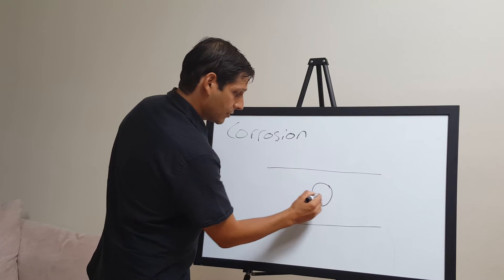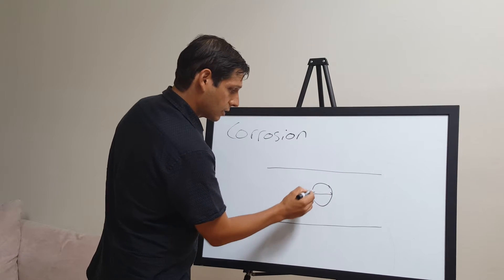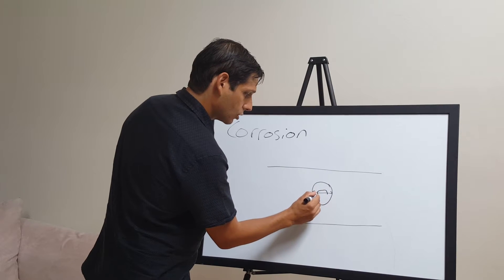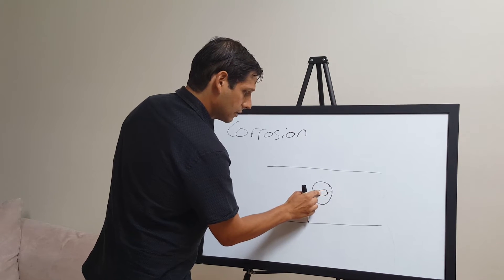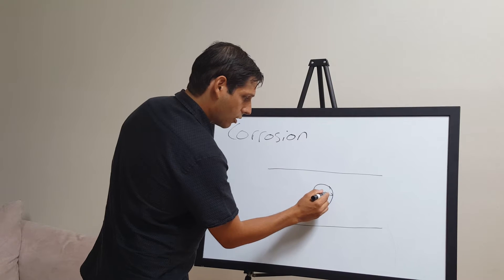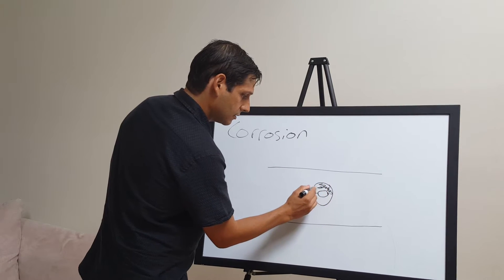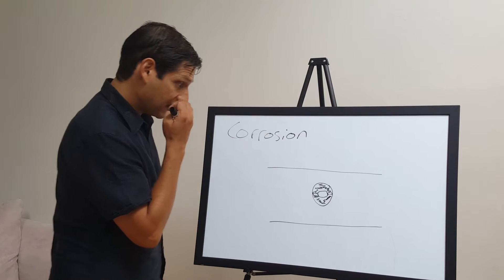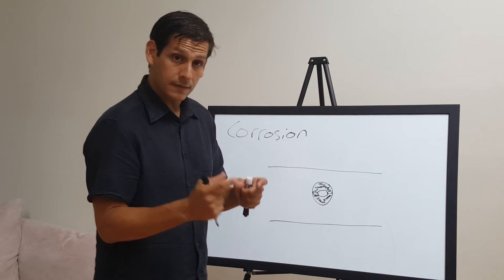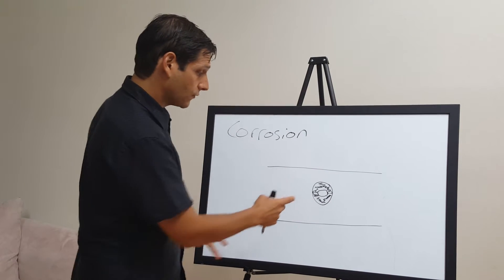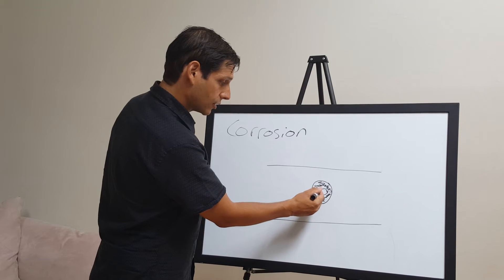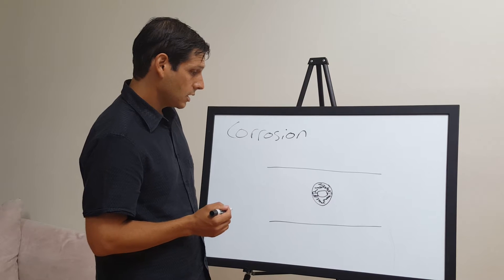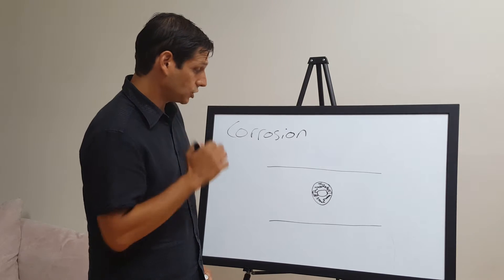If this is the total diameter of your rebar to begin with, you actually end up getting a smaller component that is the rebar, and all this extra area is corrosion. A couple things happen when the rebar becomes corroded. First of all, you get reduction in the diameter of the steel, but you get a couple of other physical changes to it.